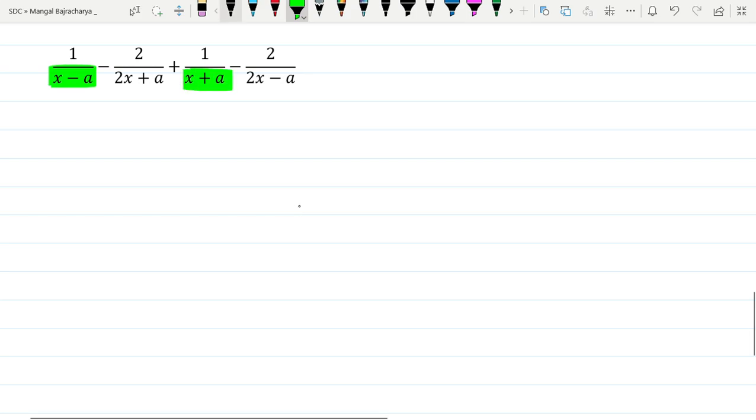So 1 divided by x minus a plus 1 divided by x plus a. The denominator is 2x plus a and 2x minus a, so 2x plus a minus 2 divided by 2x minus a.